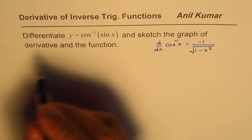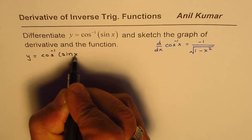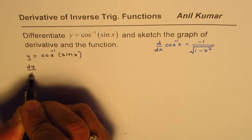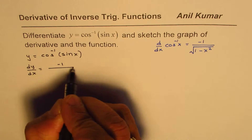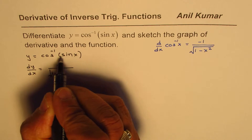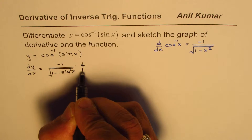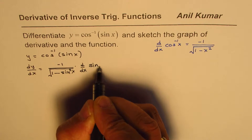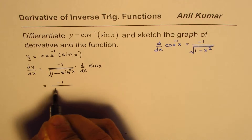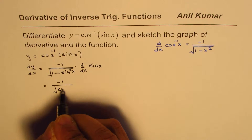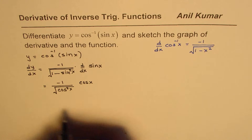We are given the function y equals cos inverse of sine x, so we can write dy/dx. The derivative of cos inverse applied by chain rule gives minus 1 over square root of 1 minus sine squared x, times d/dx of sine x. The derivative of sine x is cosine x, so we write this as minus 1 over square root of 1 minus sine squared x, times cosine x.